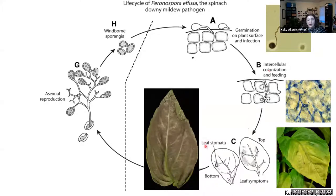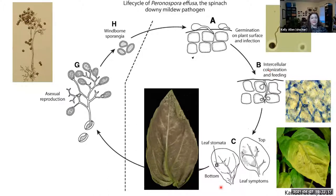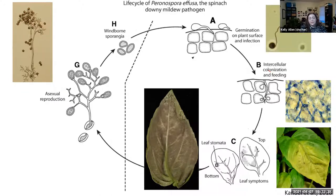Once you crank up the humidity, you see this visible sporulation, which is the asexual reproductive cycle. As we saw here, this corresponds with these elegant spore-bearing structures. One thing that has been really interesting and exciting to me — and I wouldn't have known I was excited about it until I really had to challenge myself to learn more — is understanding what's happening not just at the cellular level, but really at the molecular level between the host and the pathogen.